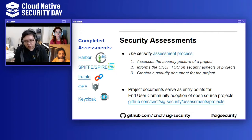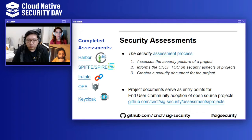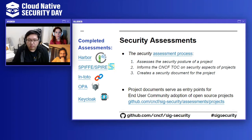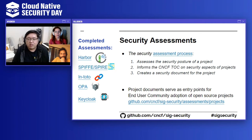There are a lot of interactions with the TOC, helping them provide recommendations on what is a project's security posture, as well as how a security project fits into the CNCF ecosystem. The output of this process is a security document. For example, if you're interested in OPA and you're not sure where to start in terms of security considerations, the security assessment document is something you should definitely take a look at. It's like a good introductory document, and security assessments are also a good way to engage in the community.